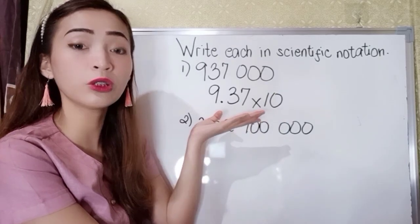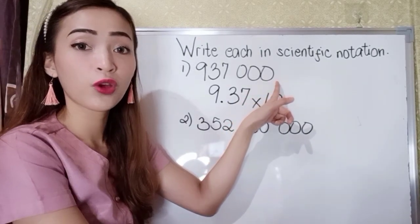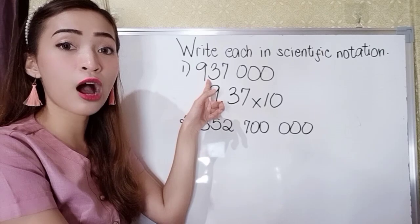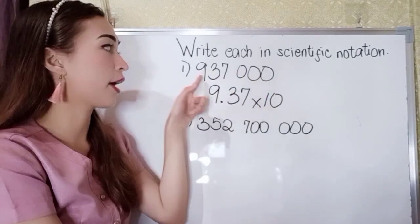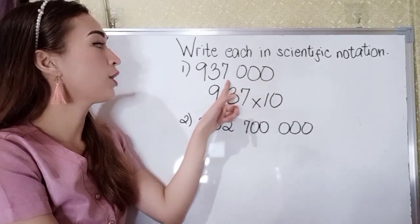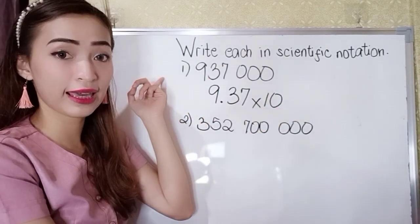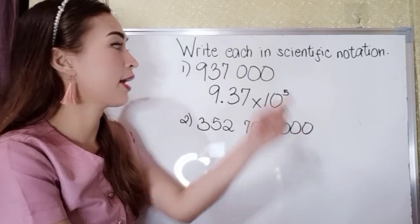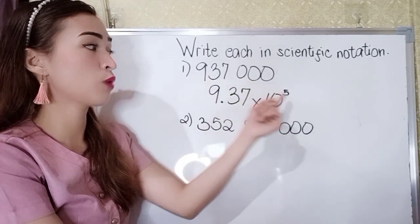Since our given is a whole number, we have 937,000, and the decimal point is at the end. Now we need to move this decimal point from the end up to the right side of our first non-zero digit. Let's count from right to left: 1, 2, 3, 4, 5. Since we're moving from right to left, that is a positive exponent. So we have 5 as the exponent — 9.37 × 10⁵.